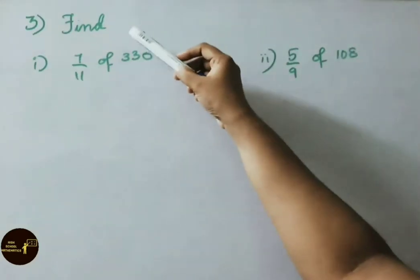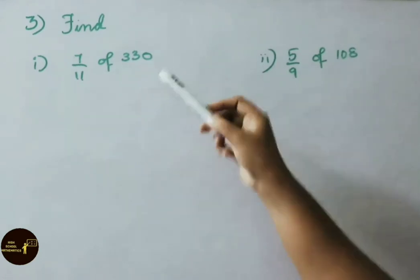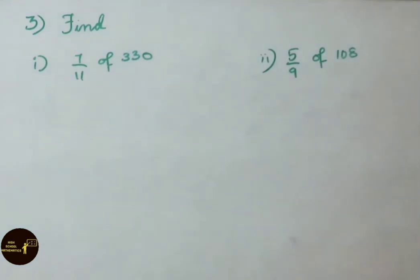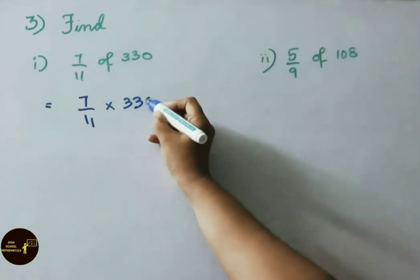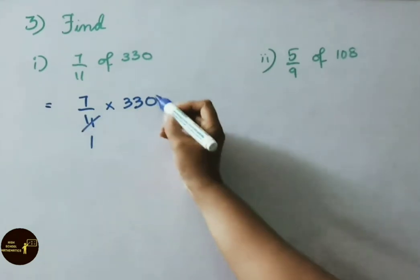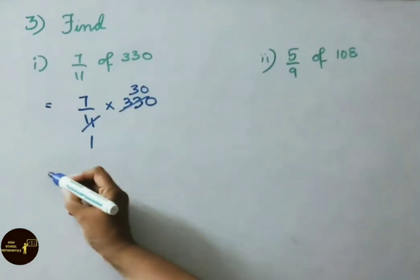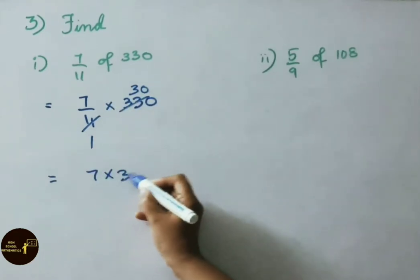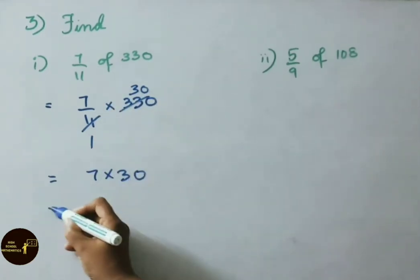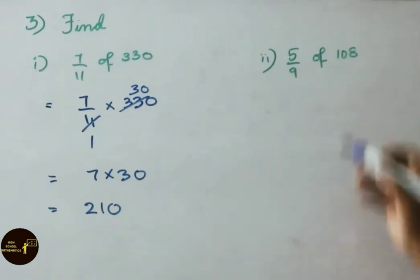Question 3: find 7 by 11 of 330. 'Of' means 'into', so write 7 by 11 into 330. In the 11 times table, 11 thirties are 330. Now multiply the numerator: 7 into 30 equals 210. So the answer is 210.